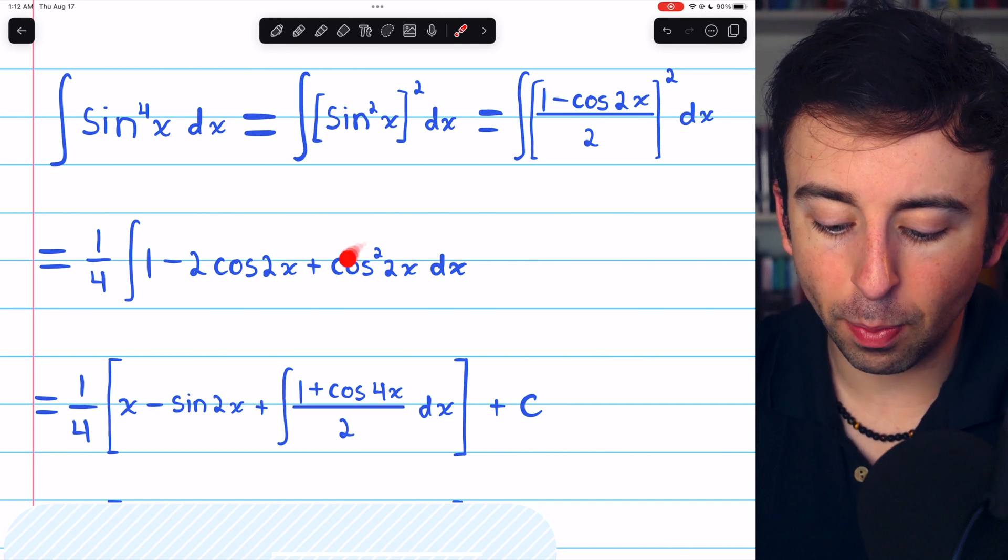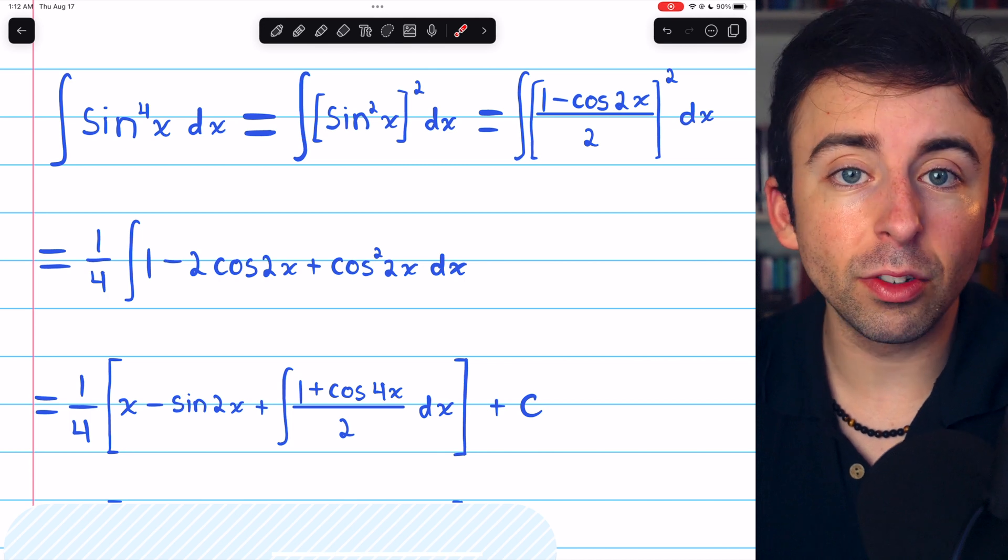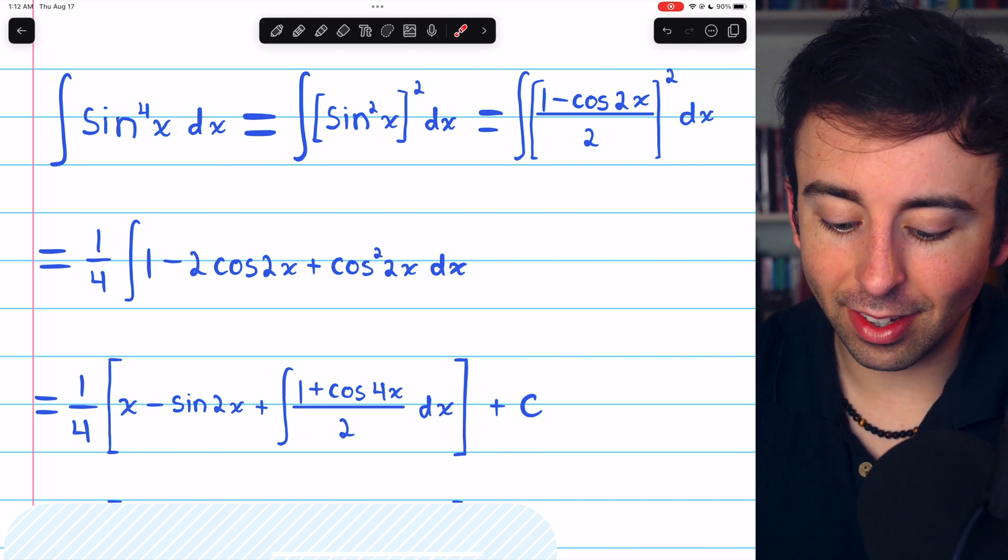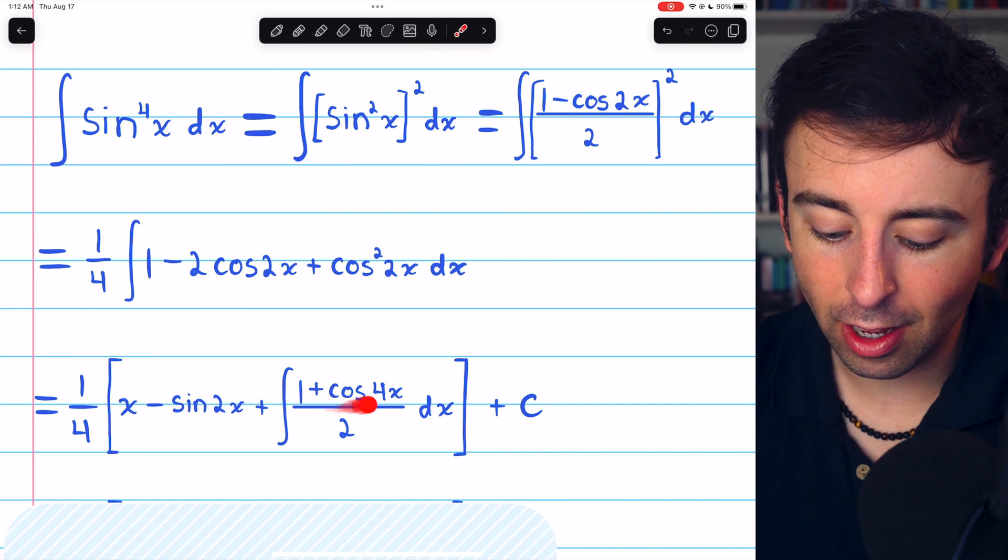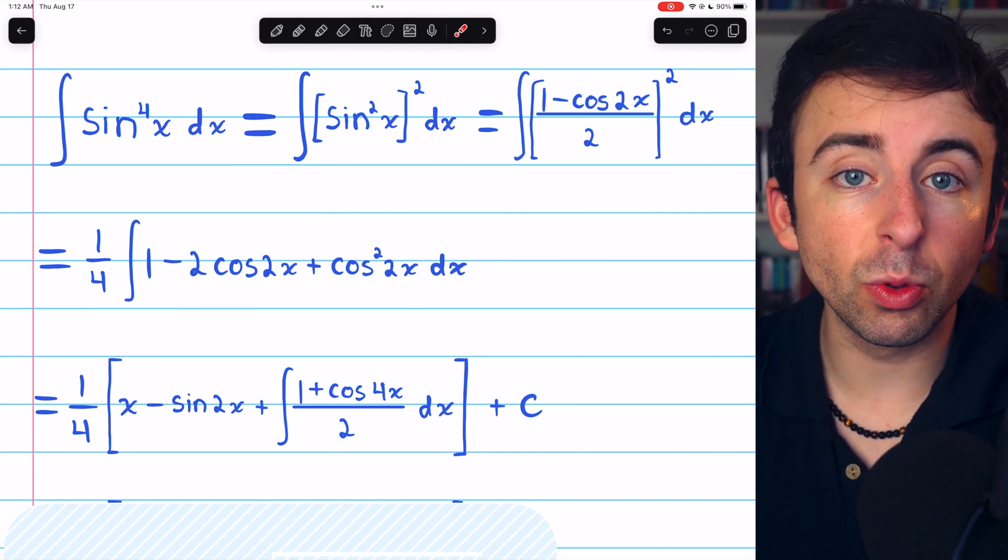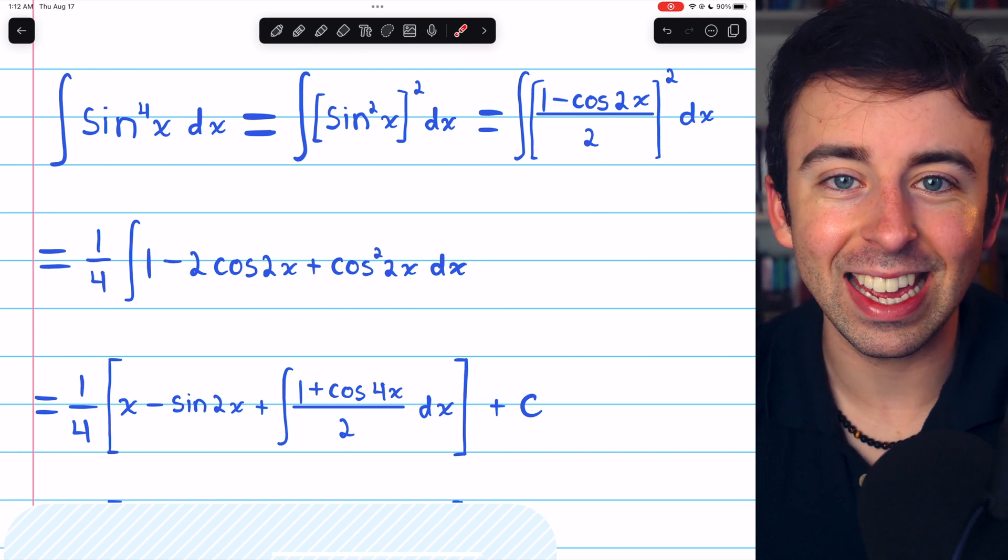Then, we just have to integrate this part, cosine squared of 2x. Cosine squared of 2x, though, is the same as 1 plus cosine of 4x all over 2. And since we did some integration, we'll also throw on the arbitrary constant at the end.